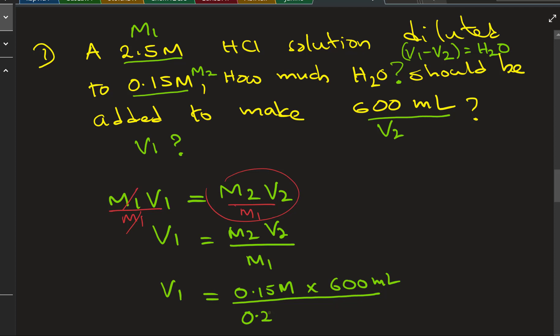M1 is 2.5 big M. The big M cancels out and you're left over with milliliters, so that's the whole point. You don't need to convert milliliters to liters in this case.